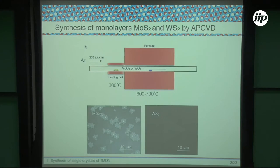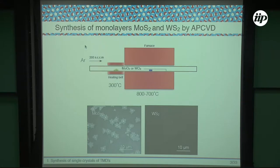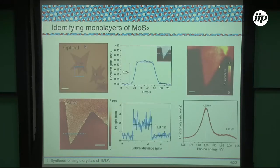For molybdenum disulfide and tungsten disulfide, you just need argon at a flow of 200 SCCM. But if you want to grow selenides like molybdenum selenide or tungsten selenide, you should change the gas and use argon plus hydrogen for selenides and tellurides. This system is quite simple, and at the end you can get these monolayers of TMDs.